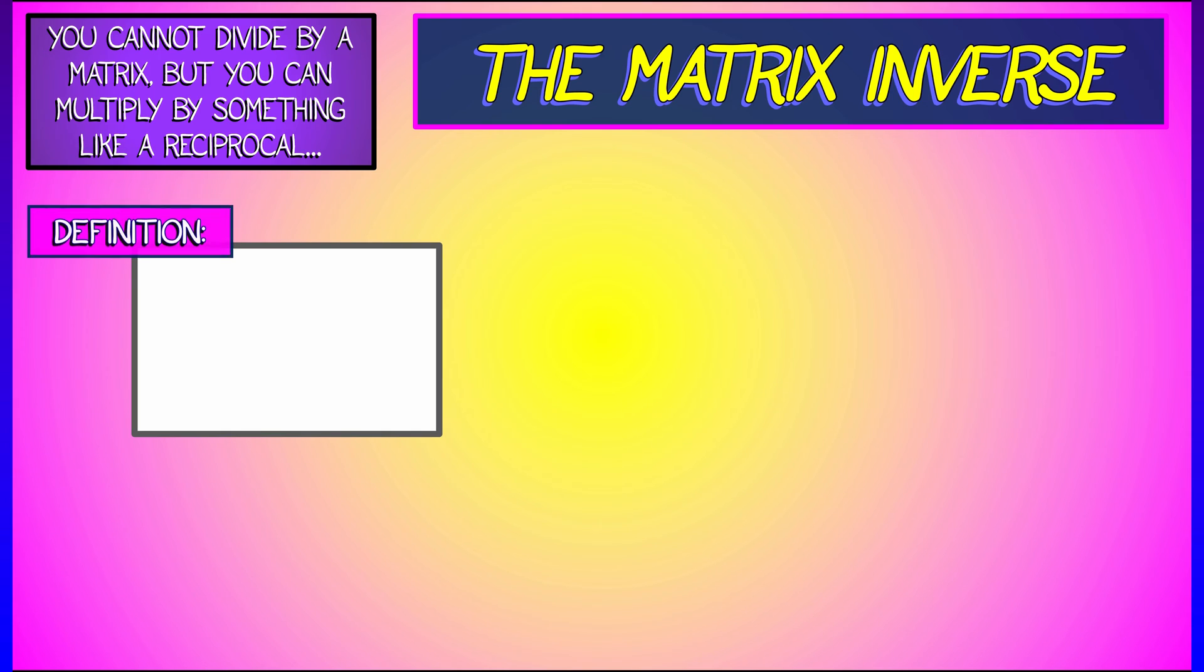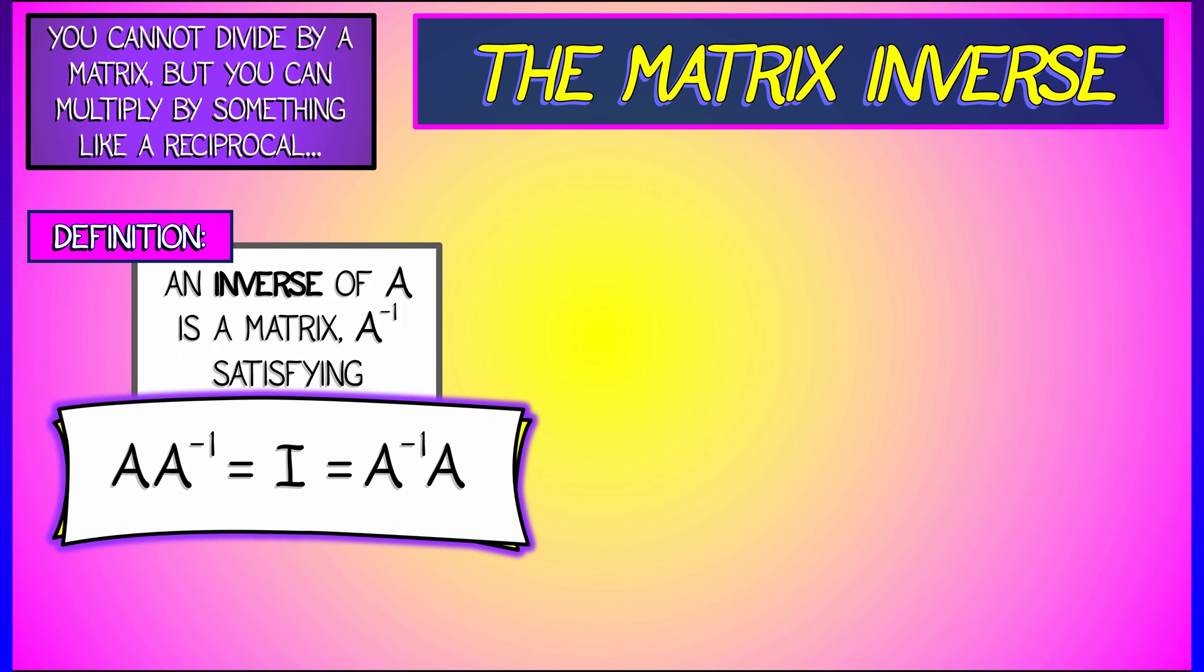This is the inverse of A. It's denoted A superscript negative one, A inverse, and it satisfies the conditions that A times A inverse is the identity, and also A inverse times A, since matrix multiplication is not necessarily commutative. Okay. That's it. That's the definition.